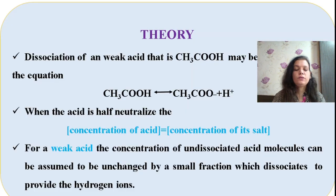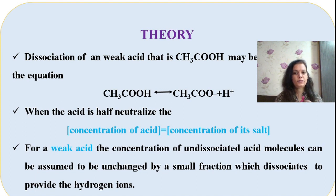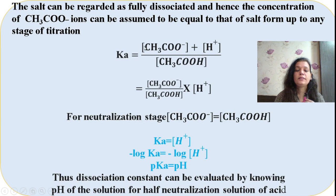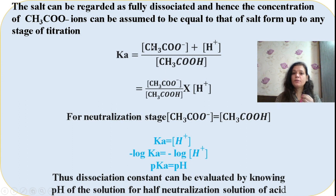Let us first understand how a weak acid dissociates in aqueous media. It dissociates to give the ions CH₃COO⁻ plus H⁺. When this acid is half neutralized, if we apply the law of mass action, we get the ratio of dissociated ions to undissociated ions. At the half neutralization point, the concentration of salt and the concentration of undissociated molecules remain the same.